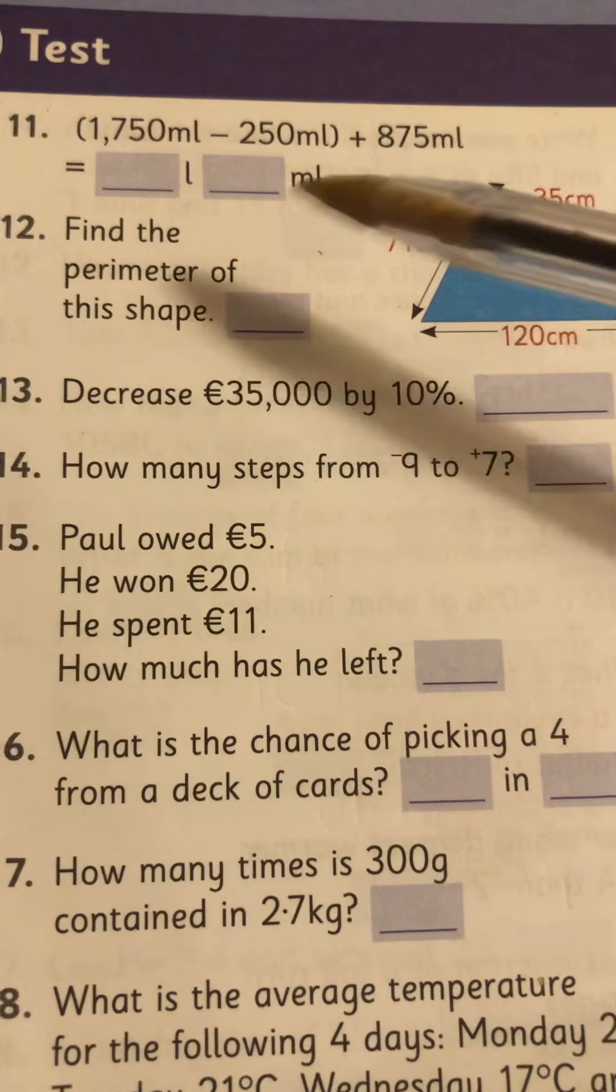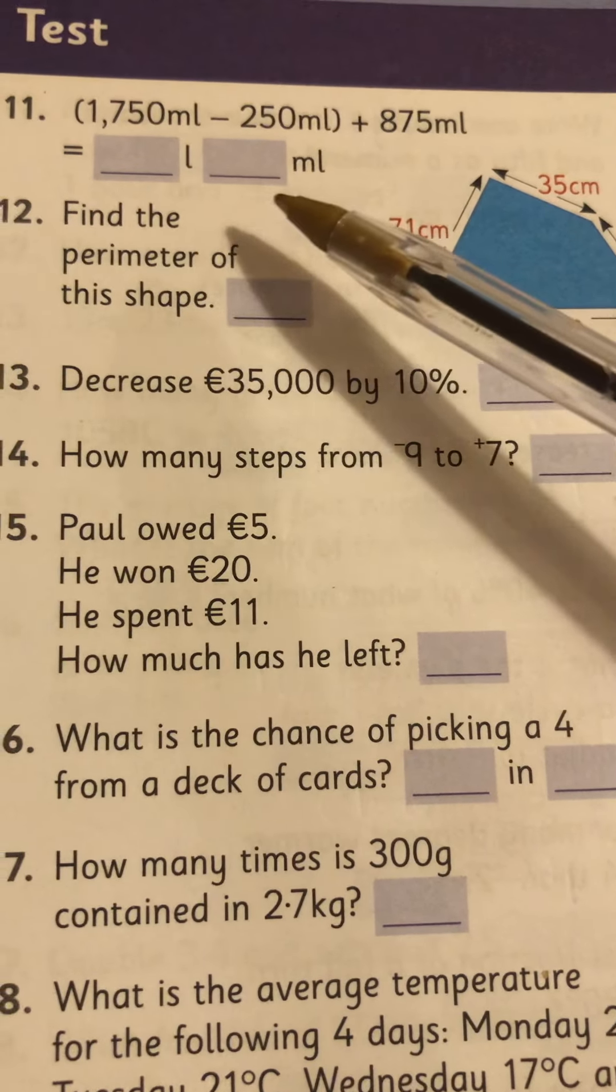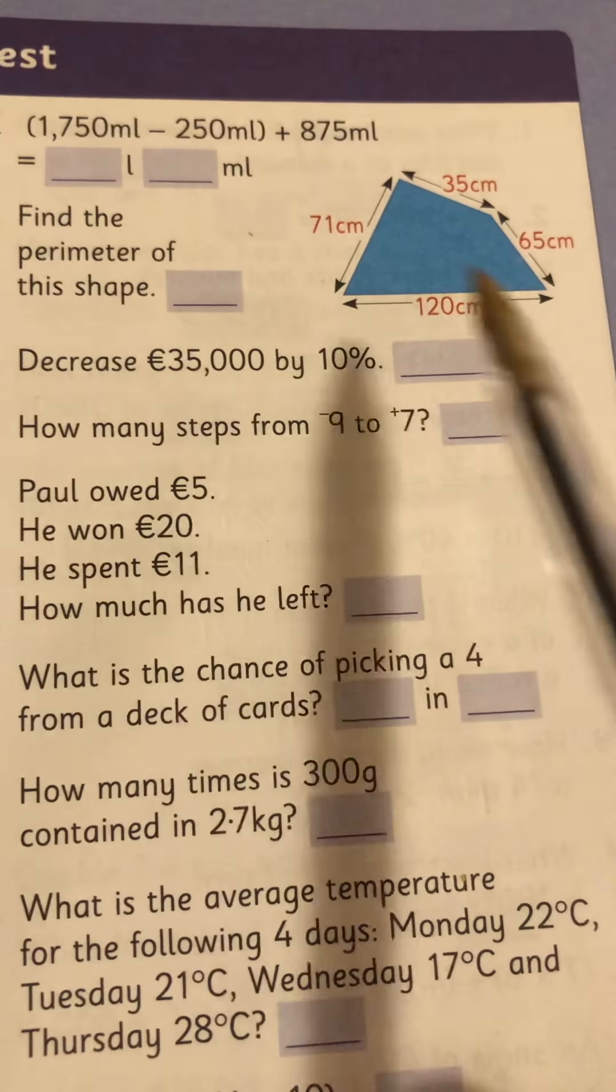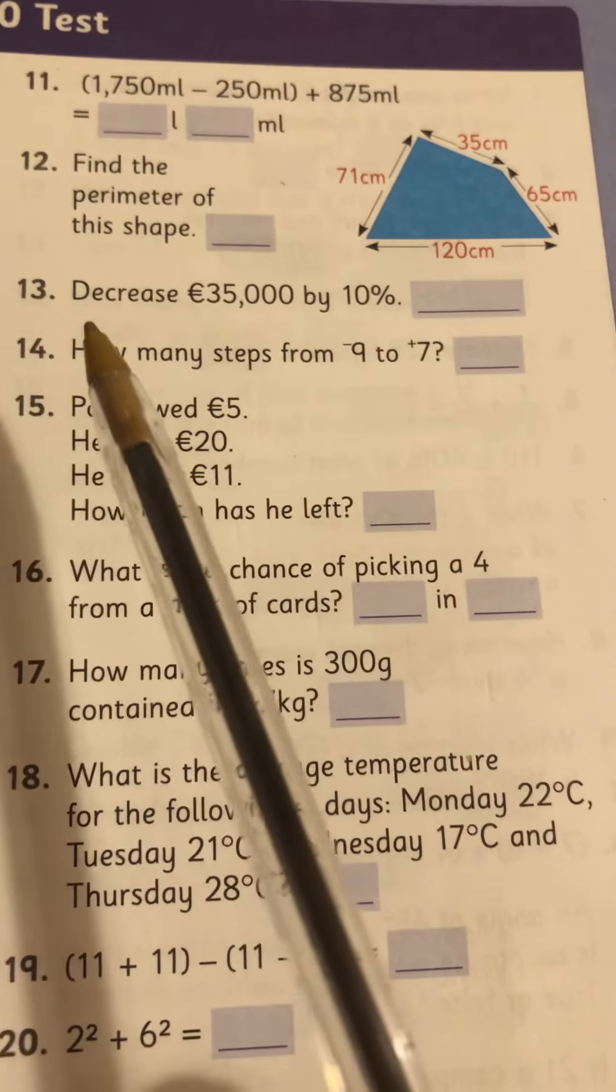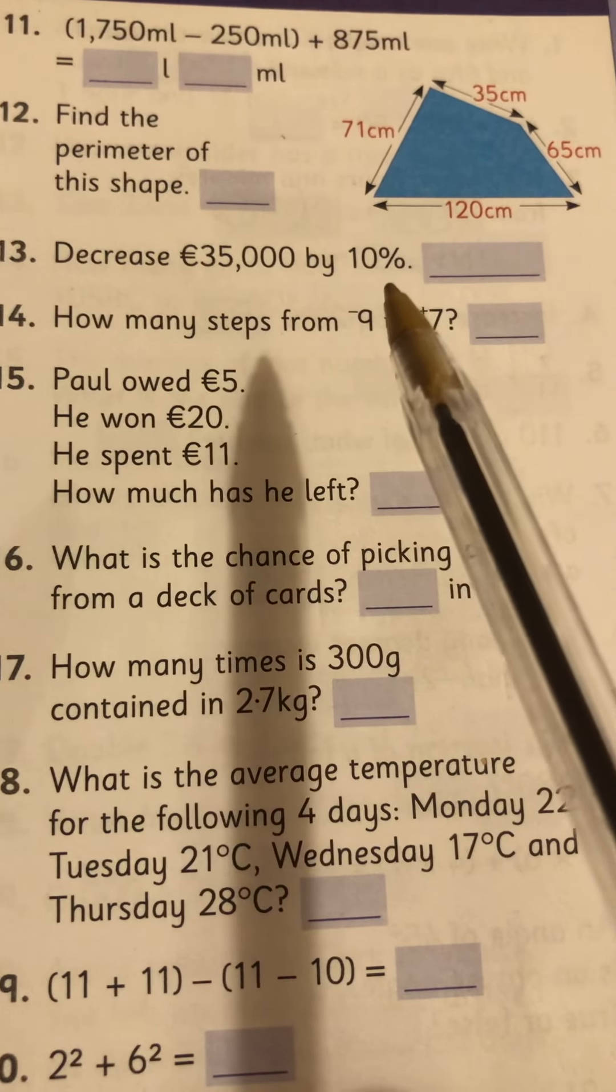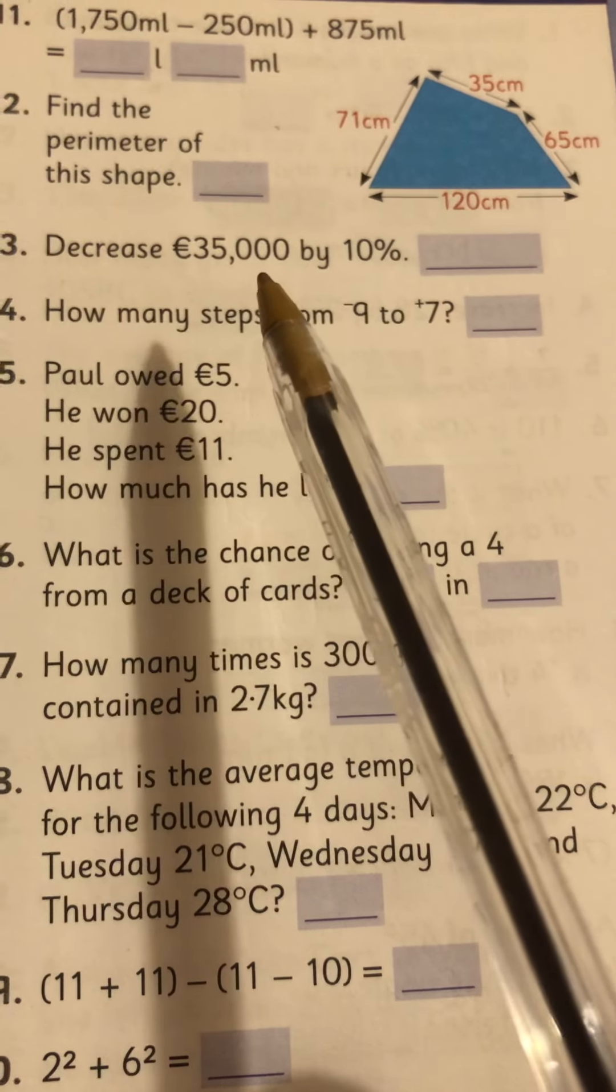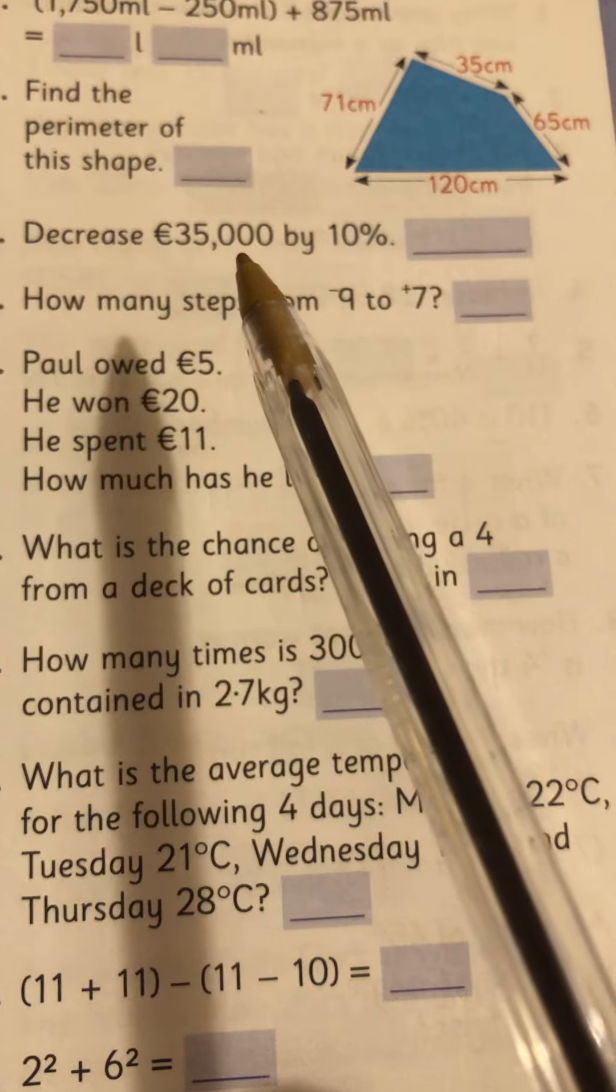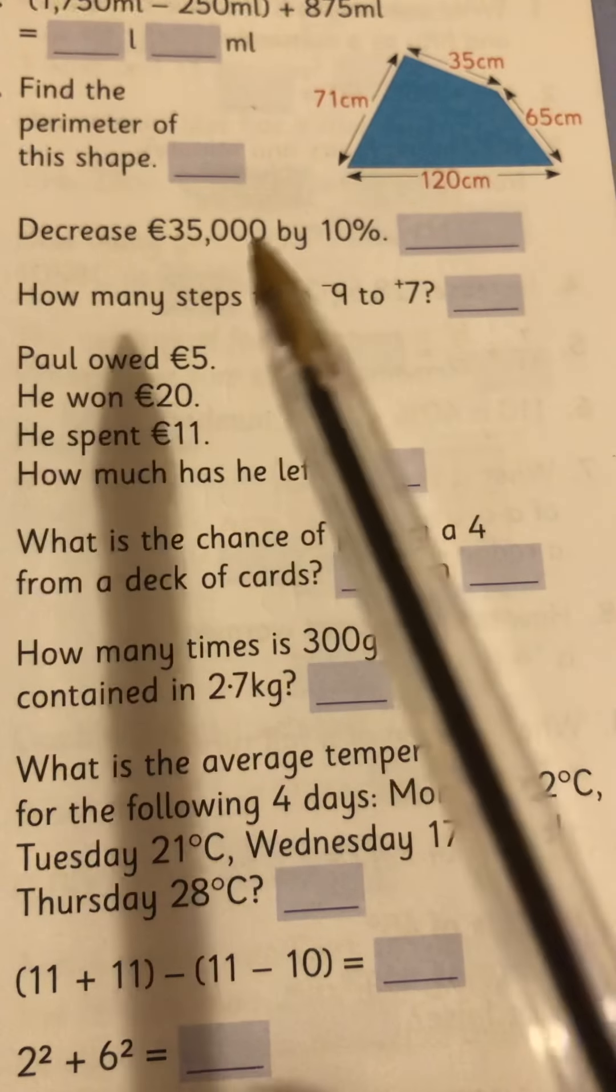Number 11, you just have to remember to give your answer in litres and millimetres. Number 12, the perimeter, adding all the sides. Number 13, decrease 35,000 by 10%. So you have to get 10% of 35,000. And then don't forget the next step. You have to take that amount off 35,000.